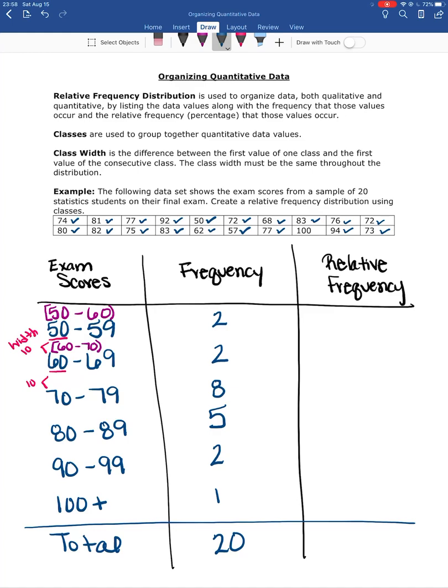Relative frequency is calculated exactly the same way as it was for qualitative data. You take the frequency for that row and divide it by the total number of data values you had or the total of the frequency column. And then you can write it as a decimal or you can write it as a percentage. It really does not matter.